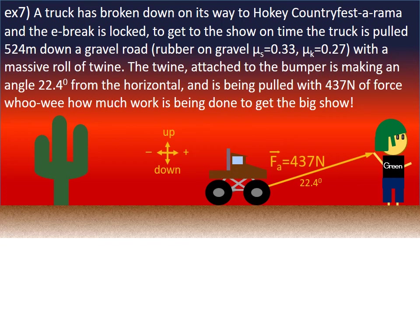So the truck is being pulled 524 metres in the positive direction, but not all force is being applied in the positive direction. The twine is being pulled in the positive direction and up at the same time, so only some of this force is actually doing work.